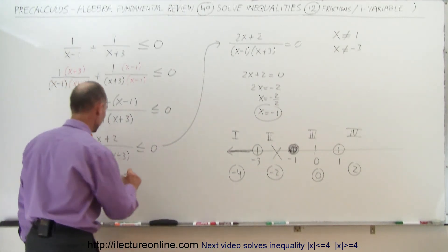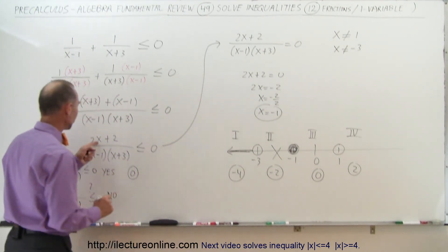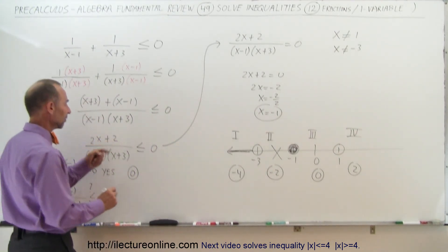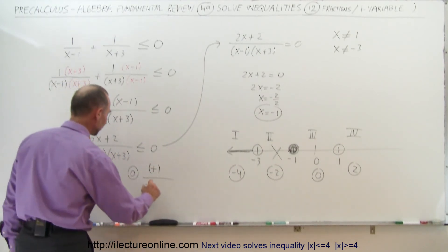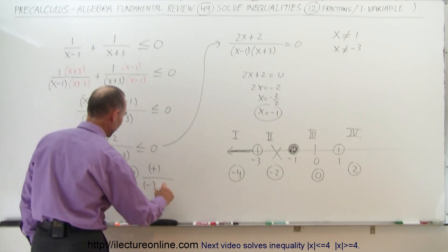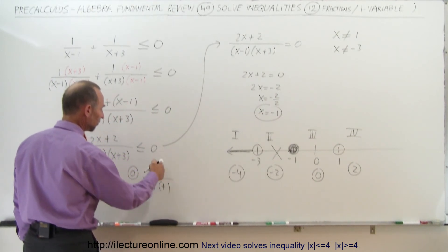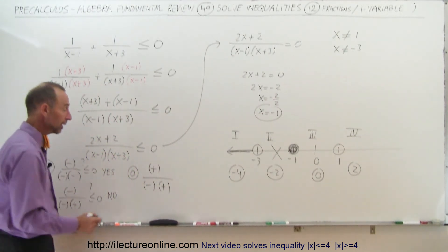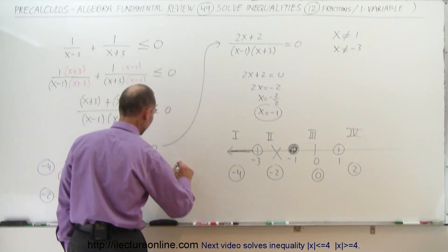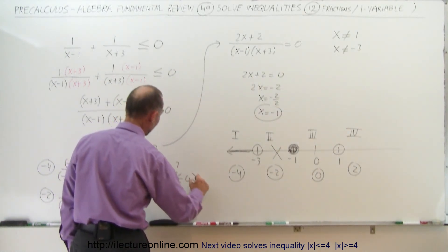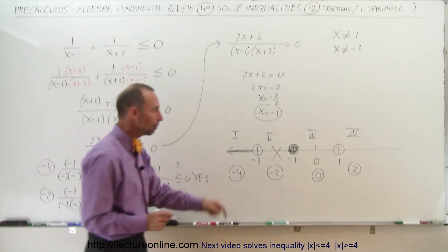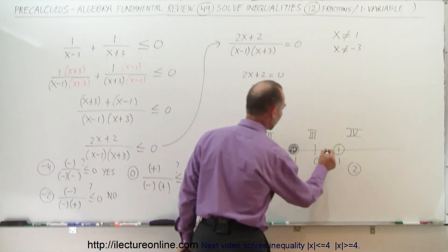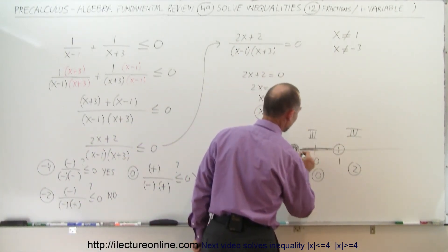Third point: the number 0 from region 3. Plugging 0 into the numerator gives a positive number. Plugging 0 into (x minus 1) gives a negative number, and into (x plus 3) gives a positive number. So we have positive divided by negative divided by positive — that is a negative number. Is that less than or equal to 0? Yes. A negative number is always less than 0, so region 3 satisfies the inequality.